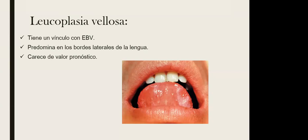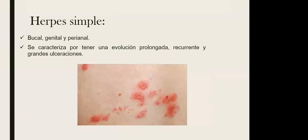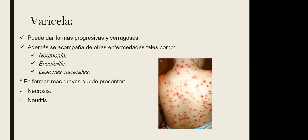La leucoplasia vellosa por lo general es dolorosa con ingesta de alimentos muy condimentados. El herpes simple tipos 1 y 2, bucal y genital, se caracteriza por una evolución prolongada y recurrente, y la lesión típica son las ulceraciones. La varicela —herpes simple tipo 3— da formas progresivas y verrugosas con pápulas rojizas que pueden llegar a ser incluso pustulosas.